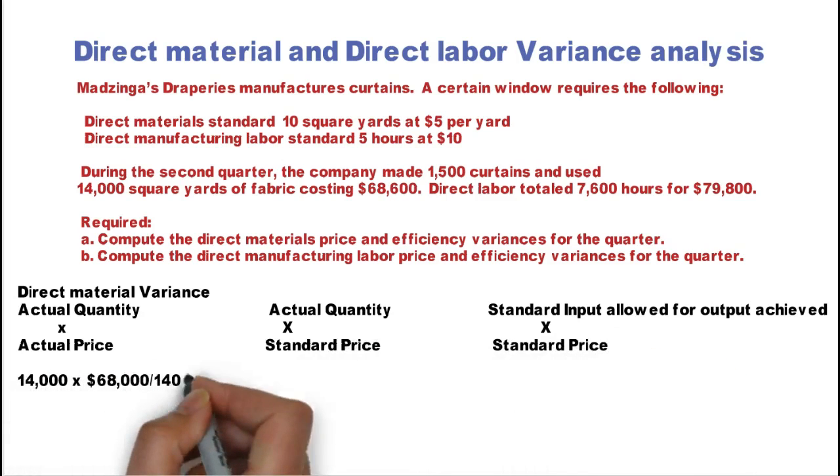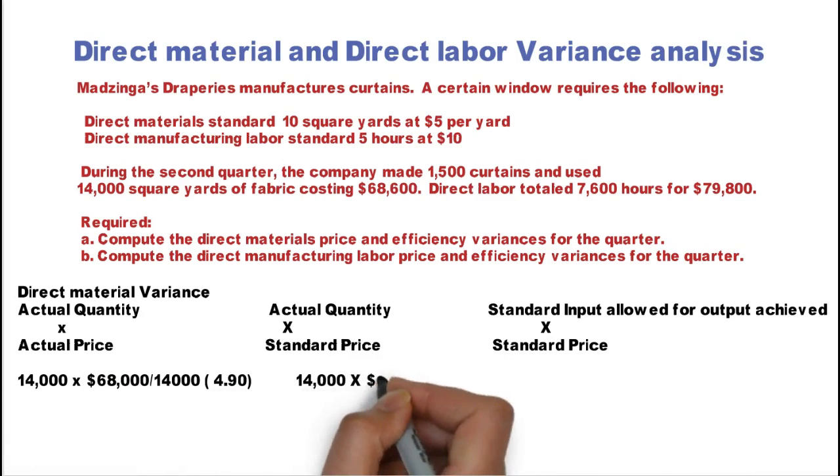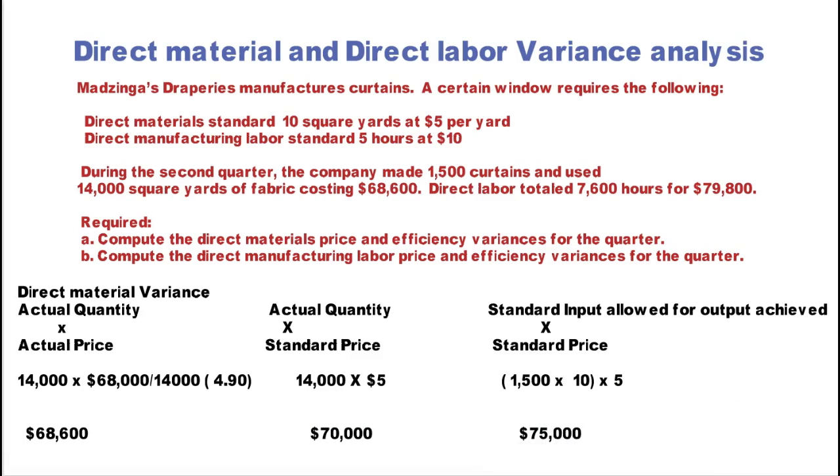Actual quantity times the standard price in the middle, and the standard input allowed for the actual output achieved times the standard price. The actual quantity was 14,000, but we don't have the price per yard, so we have to figure that out. The total price was $68,600 and the quantity was 14,000, so the actual price is $4.90. So we already have this $68,600.